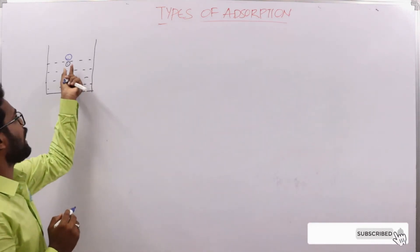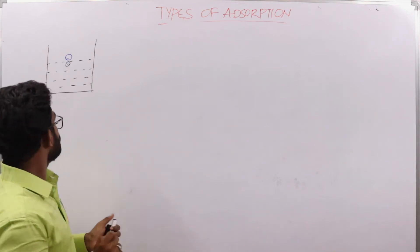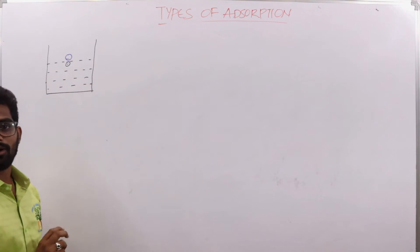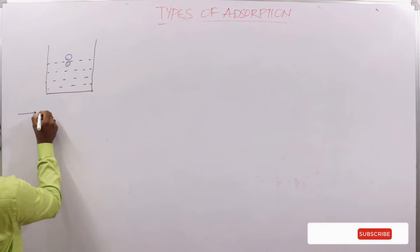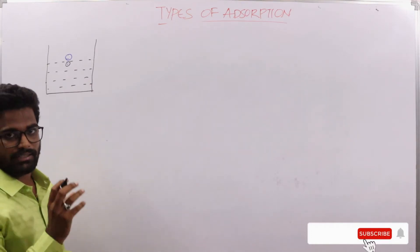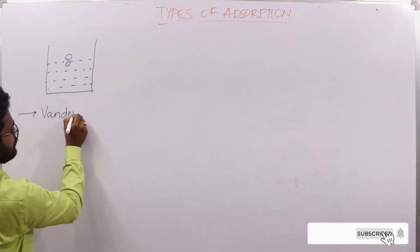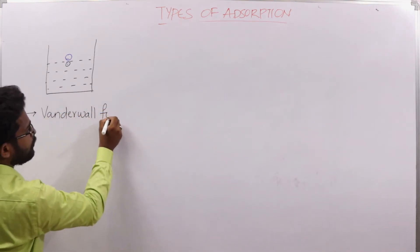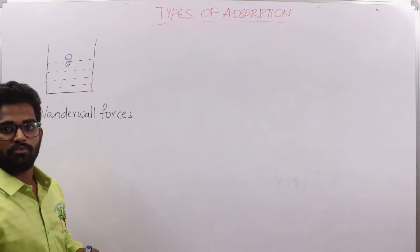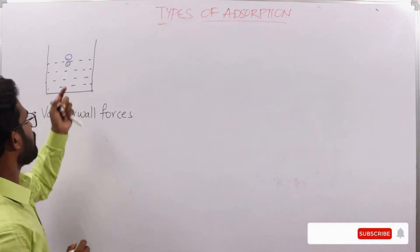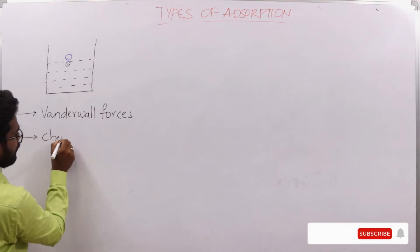That is, the bond is between the molecule of the adsorbate and the molecule of the adsorbent. This bond formation is generally of two types: the bond formed due to intermolecular forces called van der Waals forces, or in another type, the bond may be chemical in nature.